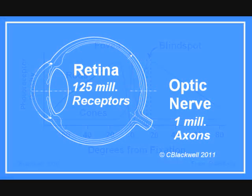Some numbers. In the retina, there are about 125 million photoreceptors, but there are only 1 million nerve fibers in the optic nerve, so there is a 125 to 1 reduction — that is, data compression — by the retina.